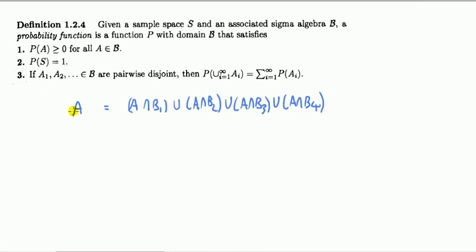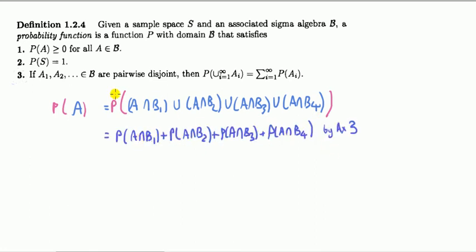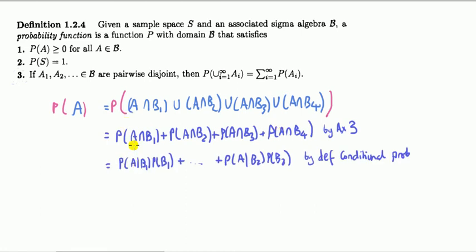So let's start now doing the proof. Since the event A — we can see from the Venn diagram — equals the union of the intersections A and Bi, therefore the probability of A is the same as talking about the probability of this event, because the two events are the same. The next line follows by axiom three: we've got four events that are pairwise disjoint and mutually exclusive as seen from the Venn diagram. So by axiom three, the probability of the union equals the sum of the probabilities of each of the four events. The final line: the probability of the intersection equals — by the definition of the conditional probability formula — probability of A given Bi times probability of Bi. And that ends the proof.